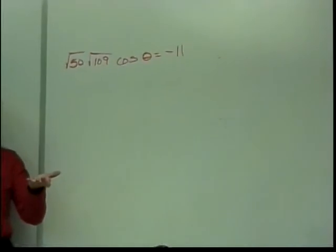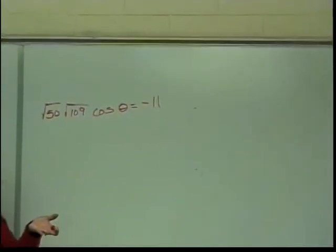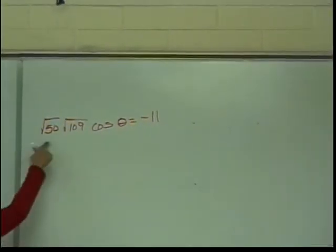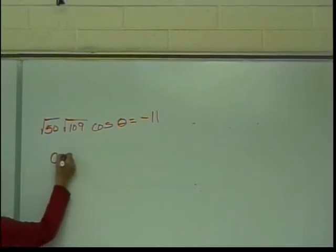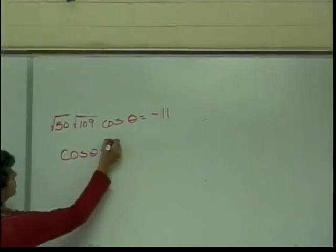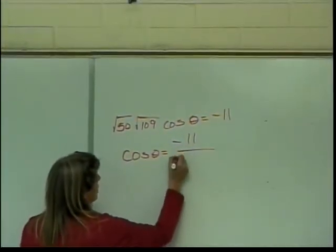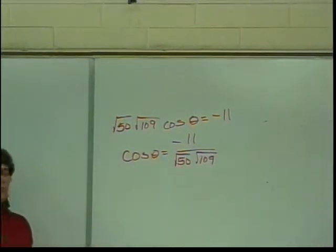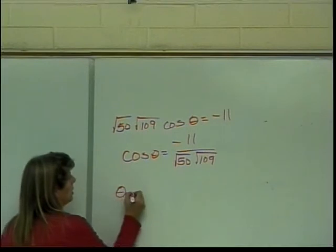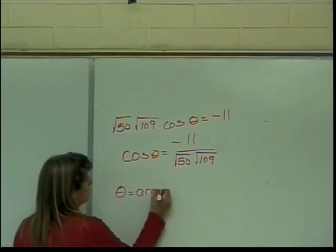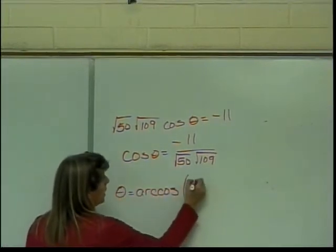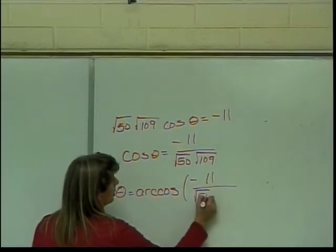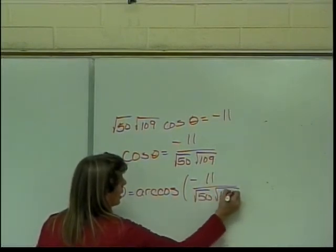I'm trying to find the angle. What do I do now? Divide by the numbers that we have. So cosine of the angle equals negative 11 divided by the square root of 50 times the square root of 109. Then, last but not least, inverse cosine. Theta equals the arc cosine of negative 11 over the square root of 50 times the square root of 109.